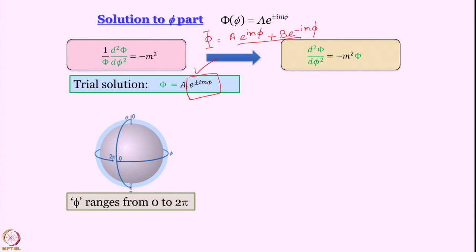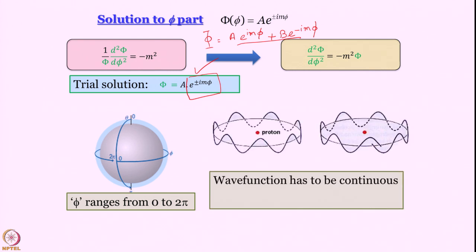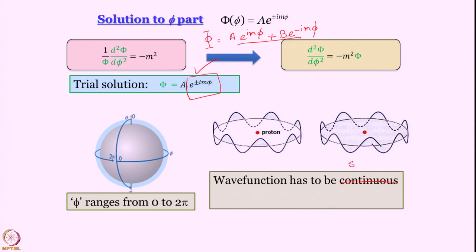One thing to remember is that phi ranges from 0 to 2π. Do we have quantization yet? Not yet, but we are very close. Now remember the boundary condition. This is our wave function. You might say it is imaginary — bear with me. Whatever the value of the wave function, it has to be continuous and it has to be single-valued. Actually, single-valued is the key requirement here. Wave function has to be continuous; it has to be single-valued also.